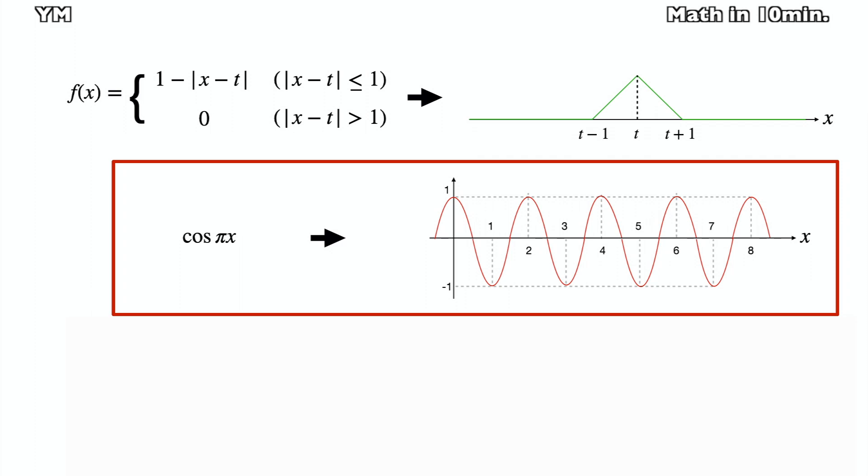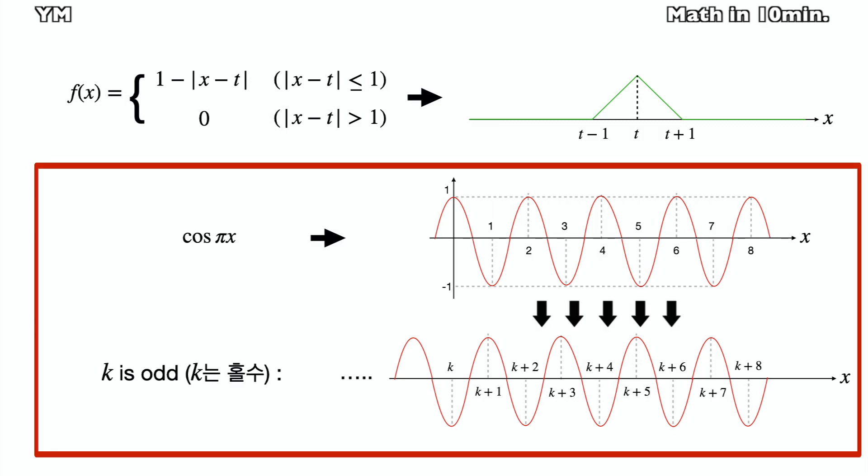Cosine pi x is as pictured below a graph of fx. Its period is 2, it has a local minimum where x is odd, and has a local maximum where x is even. So cosine pi x must look like the below between k and k plus 8, since k is odd number as given in the problem.